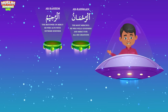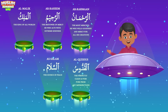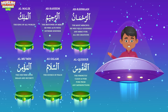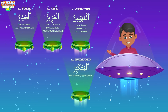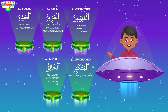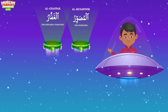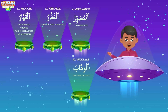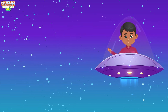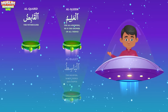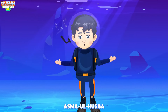Asma'ul Husna — the 99 names of Allah, the 99 attributes of Allah. Al-Rahman, Al-Rahim, Al-Malik, Al-Quddus, Al-Salam, Al-Mu'min, Al-Muhaymin, Al-Aziz, Al-Jabbar, Al-Mutakabbir, Al-Khaliq, Al-Bari', Al-Musawwir, Al-Ghaffar, Al-Qahhar, Al-Wahhab, Al-Razzaq, Al-Fattah, Al-Alim, Al-Qabid, Al-Basit, Al-Khafid.